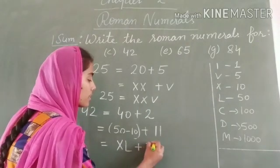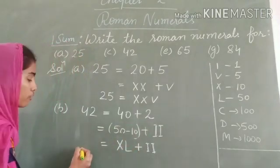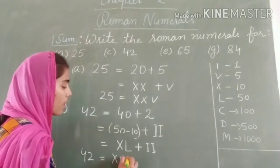So the required value for 42 equals XLII.